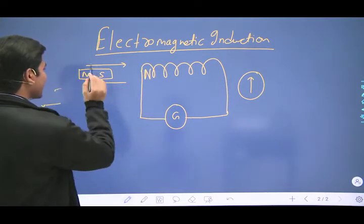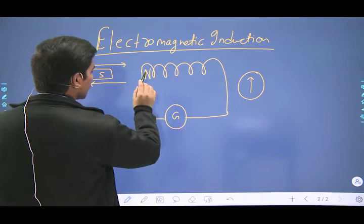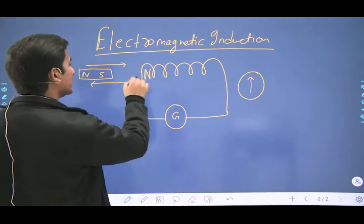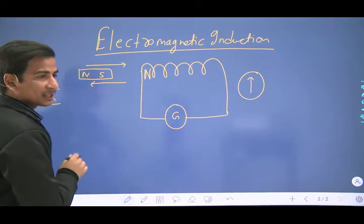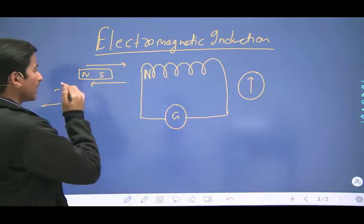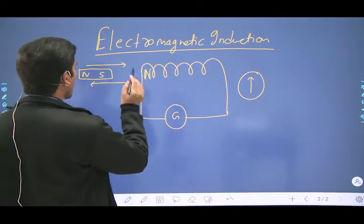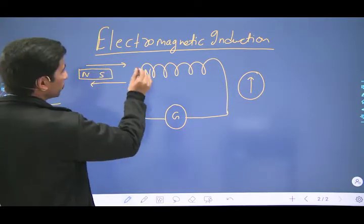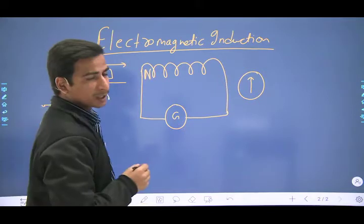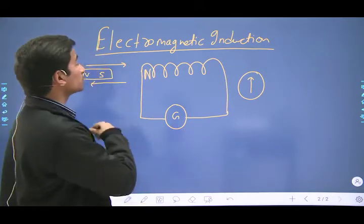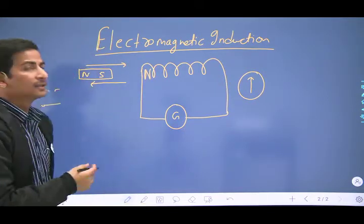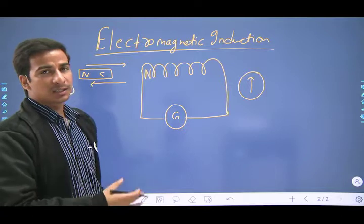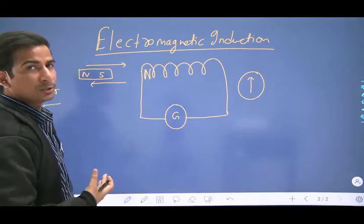Agar magnet ka south pole coil ke end ke close aa raha hai, toh woh end south pole ban jata hai taaki woh usko repel kar sake. Aur similarly, agar south pole coil ke ek end se door ja raha hai, toh woh north pole mein convert ho jata hai taaki woh usse attract kar sake. Is tariqe se induced current usi reason ko oppose karti hai jis se ye khud produce hoti hai.